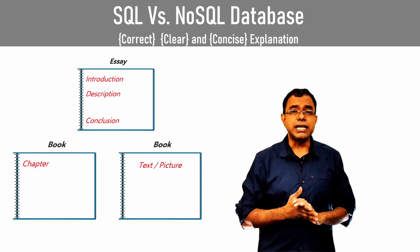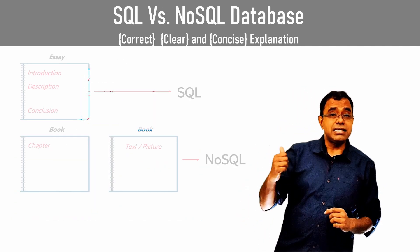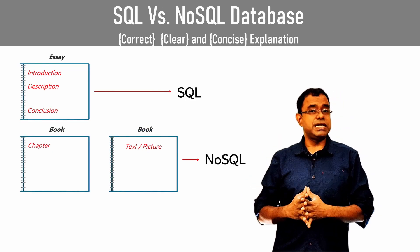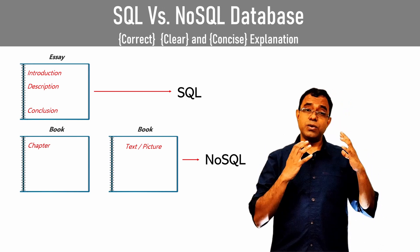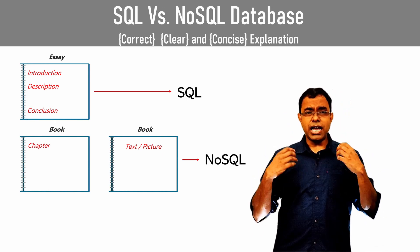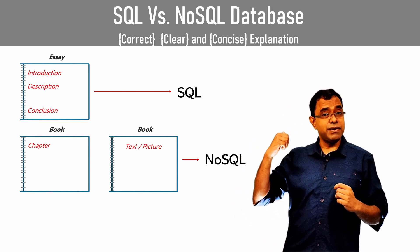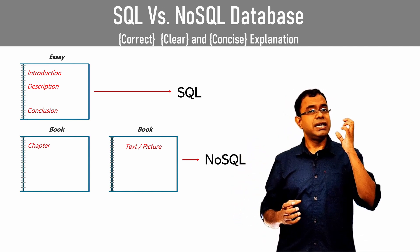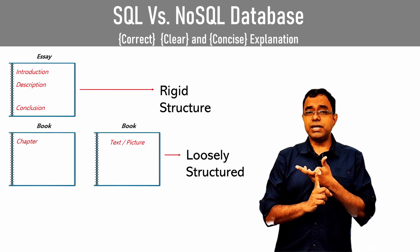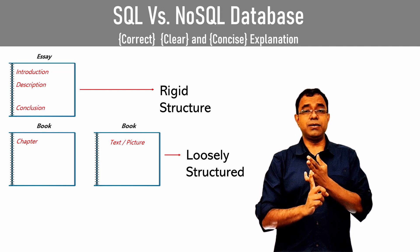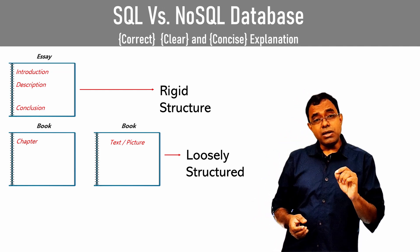So if you have to choose a database to store these notebooks, the notebook with essays will go into a SQL database. The notebook with a book or multiple chapters will go into a NoSQL database. The notebook with multiple essays goes into SQL because it follows a rigid structure — every page has introduction, description, and conclusion.